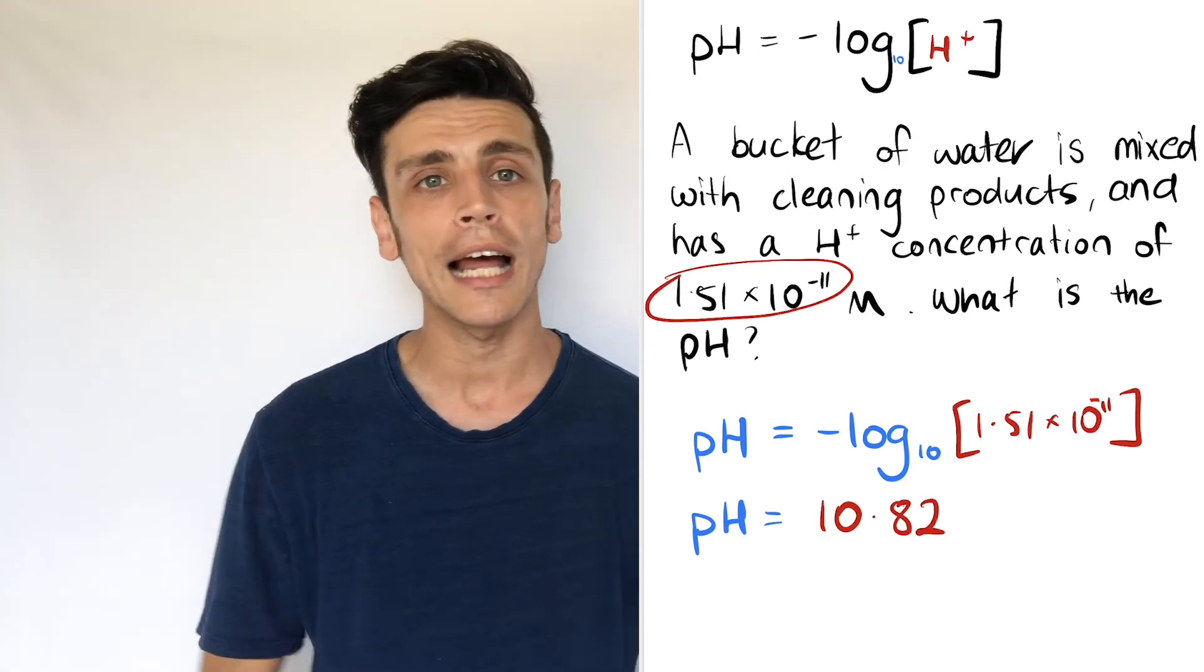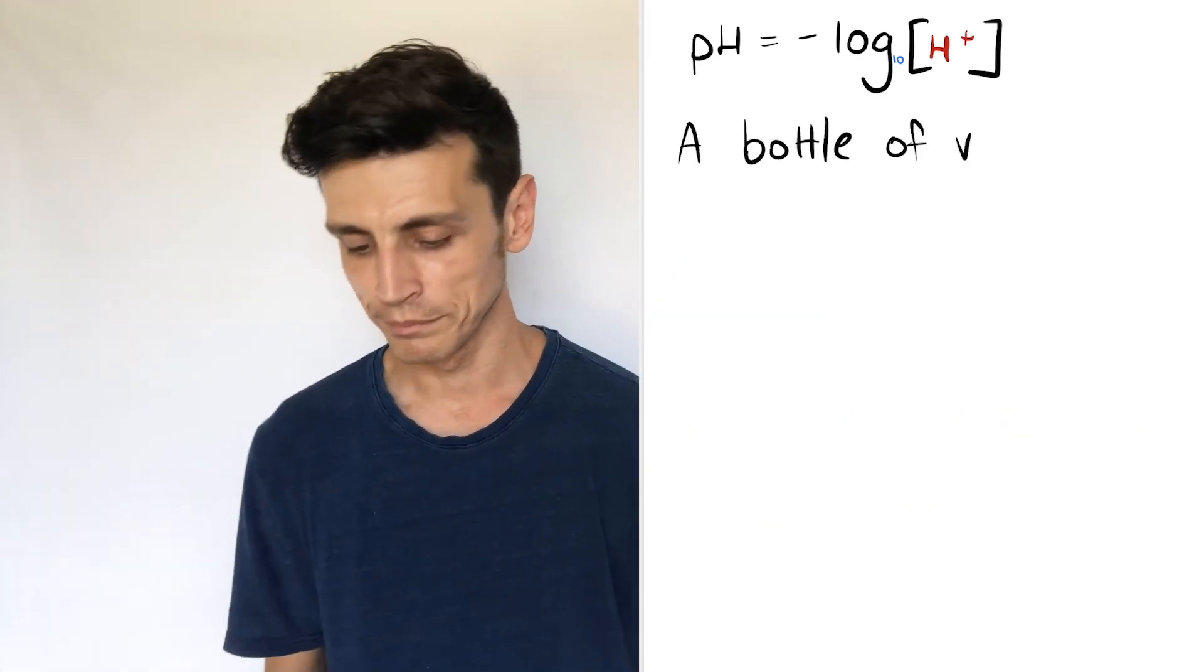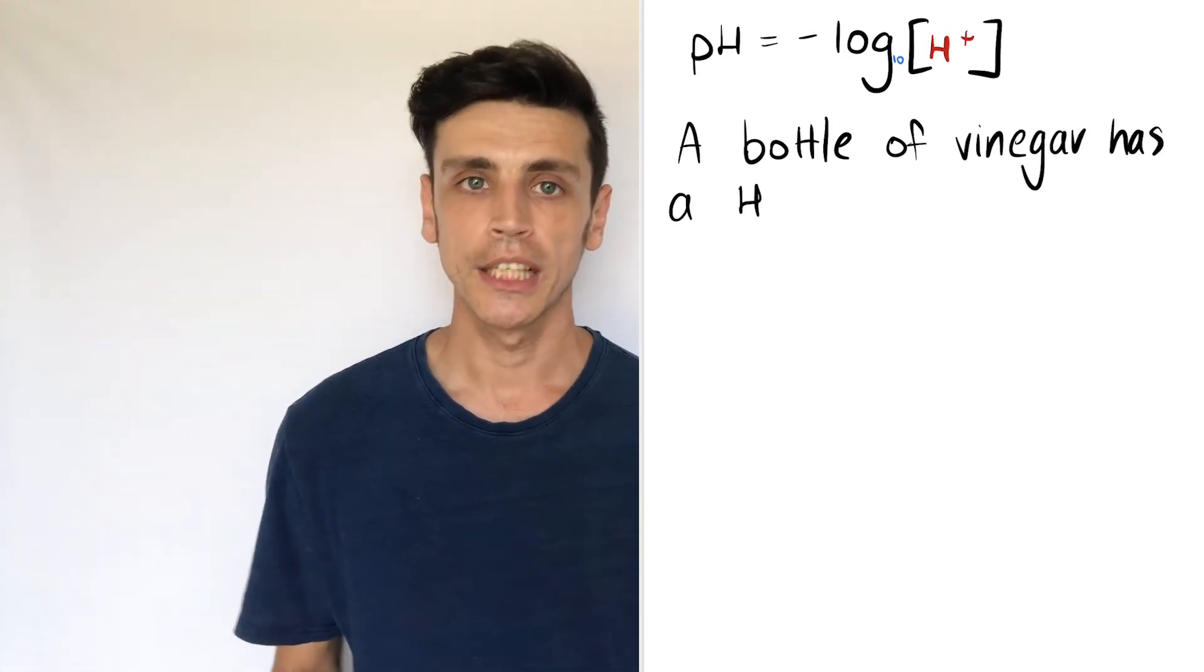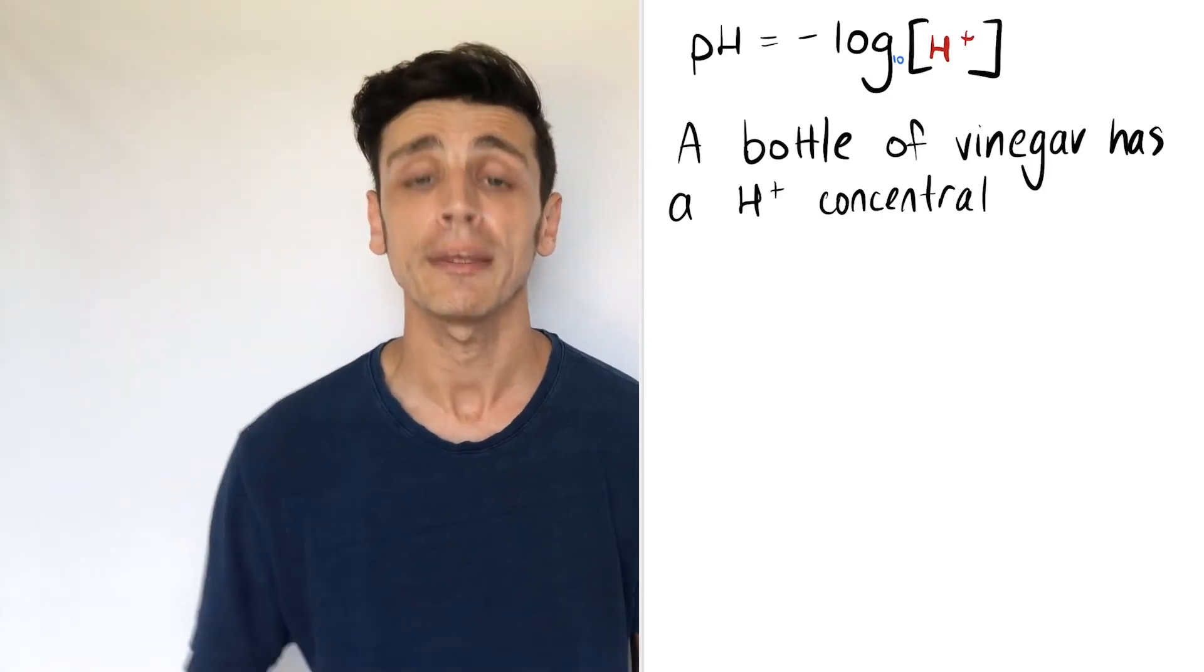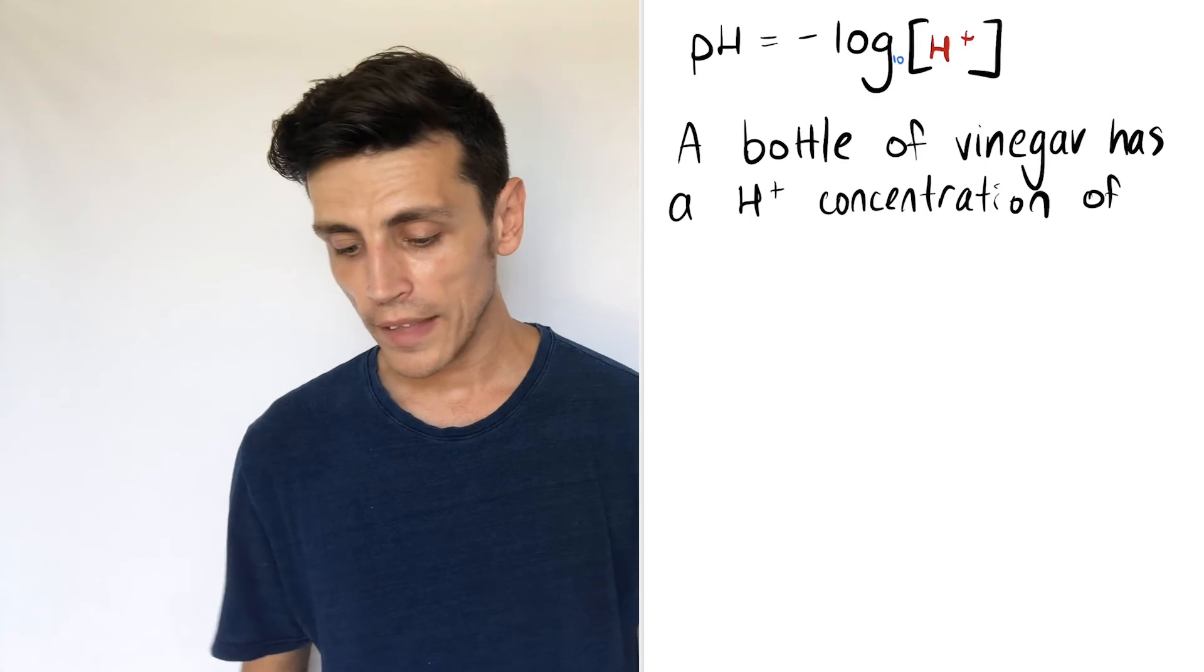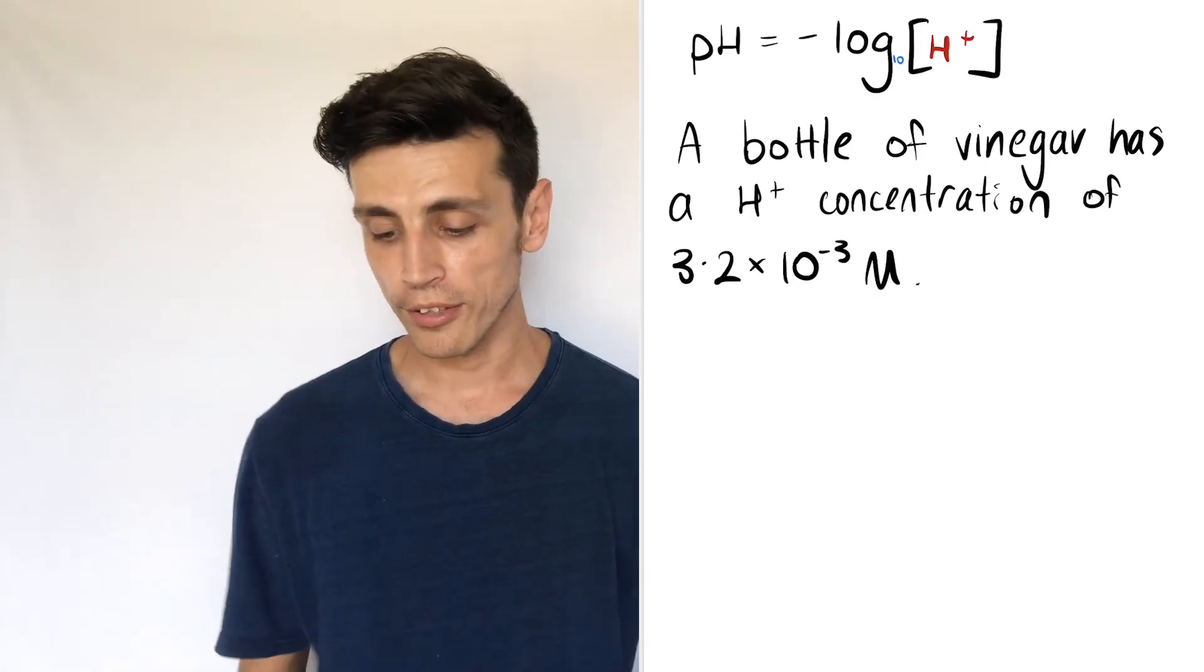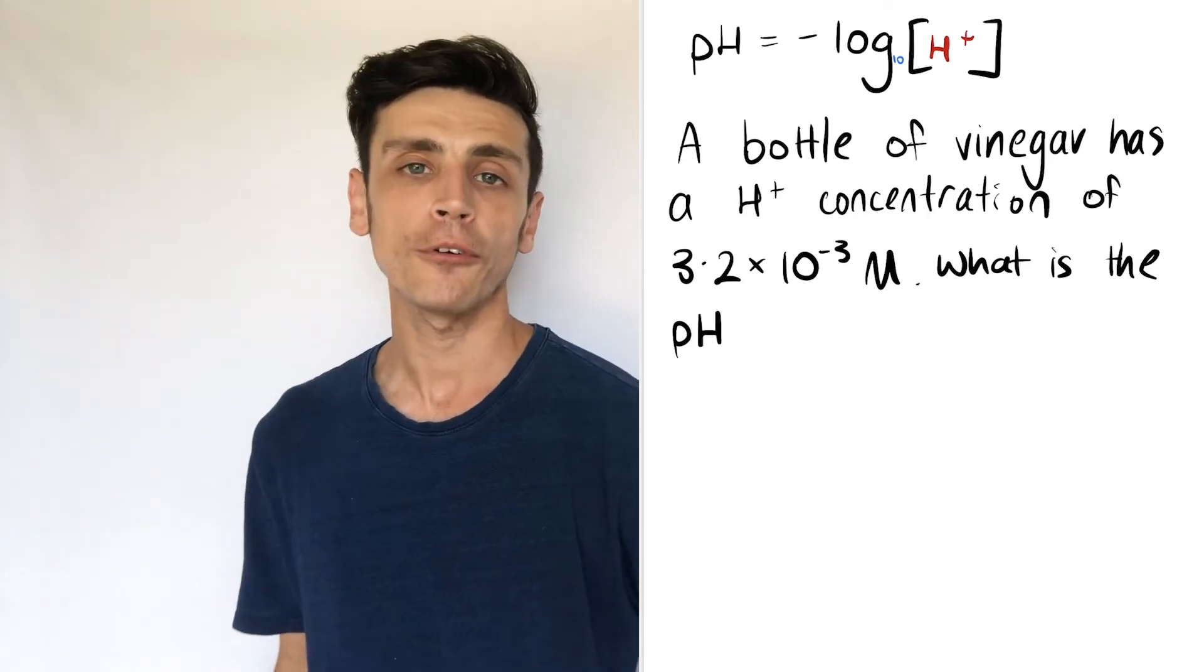We'll do one more and hopefully it makes a little bit more sense. This time we're going to use vinegar. Now vinegar is actually considered to be very acidic, so again this time around I'm going to be expecting to get a lower value, closer to 0. And we're given that the hydrogen concentration is 3.2 times 10 to the negative 3, so it's a lot bigger than the one we got before.